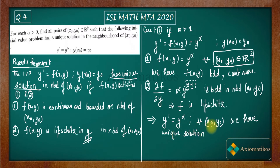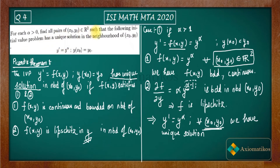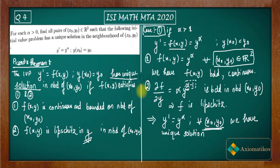So in case one, on all of ℝ² you have a unique solution for every (x₀, y₀). The question asks to find all pairs (x₀, y₀) ∈ ℝ² such that the initial value problem has a unique solution, and we got the entire ℝ² for alpha greater than one. Now what happens if alpha equals one?